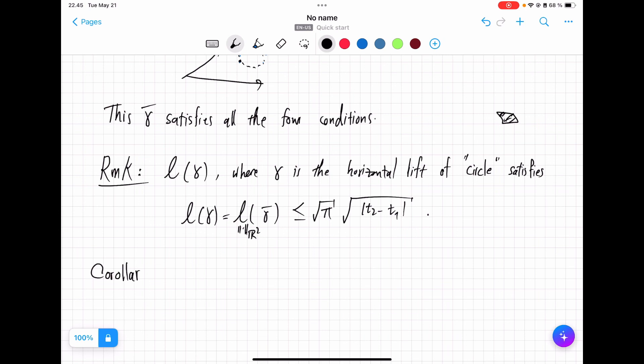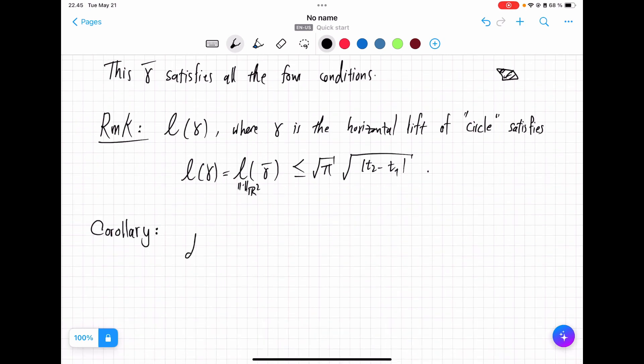So at least there is one horizontal curve with length this much. The corollary becomes that Carnot-Carathéodory distance of X1, Y1, T1 from X1, Y1, T2